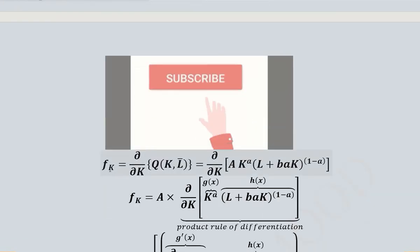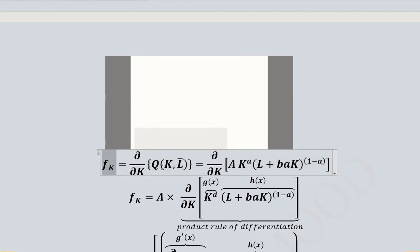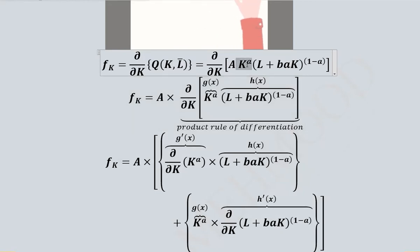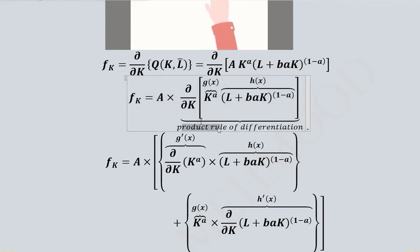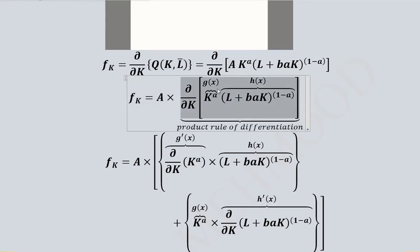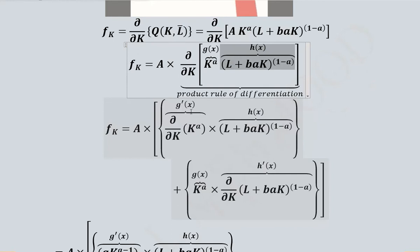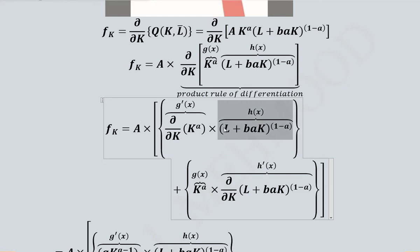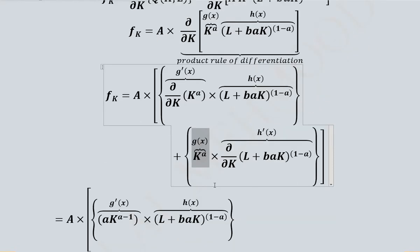Now we compute FK, the marginal product of capital in the VES production function. Labor is treated as constant and capital is the variable. Capital appears in two terms, so we apply the product rule of differentiation. Denoting the first function as G(x) and the second as H(x), the product rule gives: derivative of G times H plus G times derivative of H.